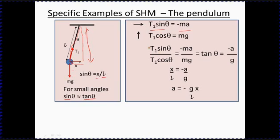The shortest way to get what we want out of these two equations is to cancel out the T1, so we can actually divide the one equation by the other. We get T1 sine theta over T1 cos theta, so the T1's cancel out, equals minus ma over mg. The m's cancel out, and sine theta over cos theta is tan theta, and minus a over g.